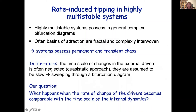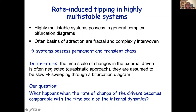Now I come to rate-induced tipping, which is also quite relevant in highly multistable systems. When you have a highly multistable system you have in general a complex bifurcation diagram: many coexisting states whose basins of attraction are usually fractal and complexly interwoven. Additionally, these systems usually possess parameter ranges with either permanent or transient chaos. This becomes important when analyzing rate-induced tipping in such systems.